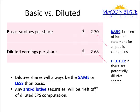Diluted earnings per share will always be the same or less than basic. Because if there are securities that could be issued, but if they were, they would make earnings per share go up, they are left off. Those are anti-dilutive securities.